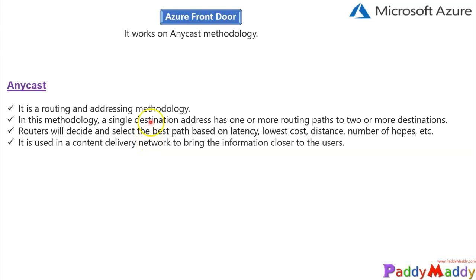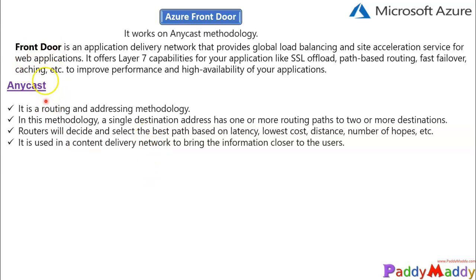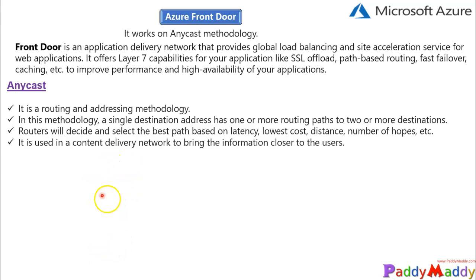End users pull information from the closest CDN network. Front Door works on anycast methodology, delivering based on Layer 7 capabilities for global load balancing and site accelerator services for web applications. For site acceleration, say a user coming from India wants to visit a web page hosted in California — they use the CDN network, going to an Asia-specific CDN, and then it uses the Microsoft backbone network, giving very low latency and faster site loading.